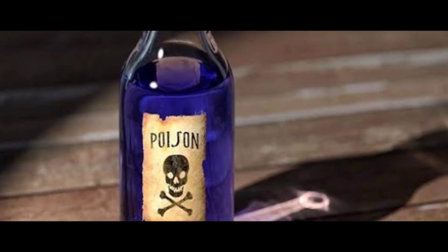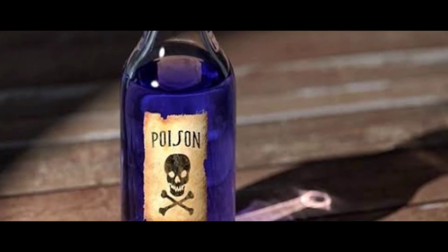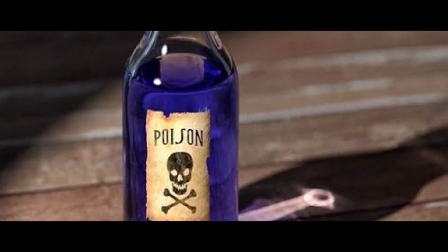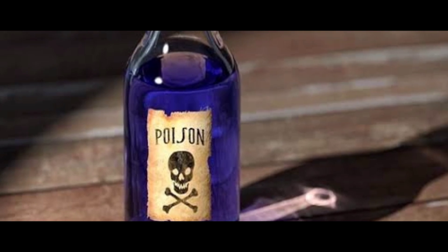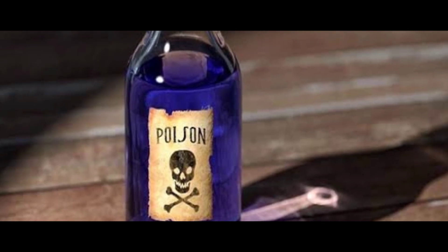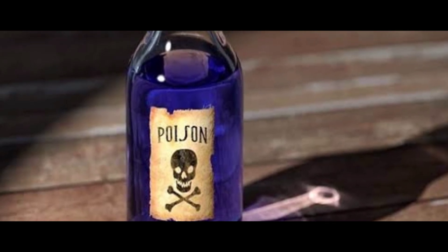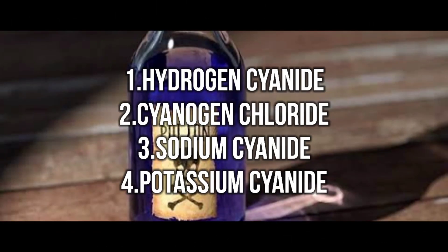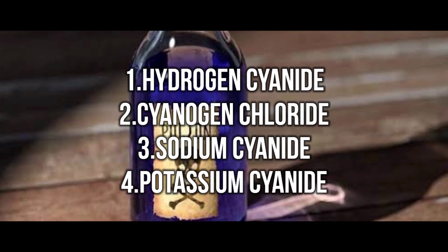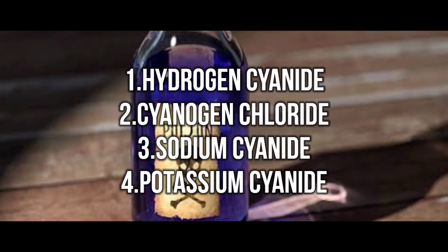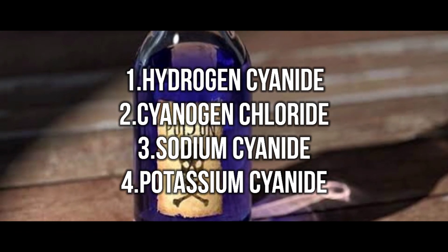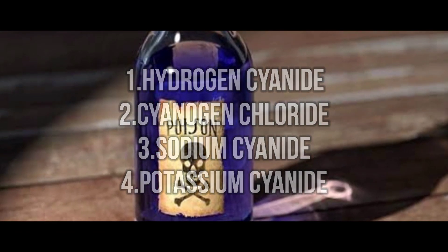Top 10 deadliest poisons — 6th place is cyanide. What are the types of cyanide? Cyanide has 4 types: 1. Hydrogen cyanide. 2. Cyanogen chloride. 3. Sodium cyanide. 4. Potassium cyanide.